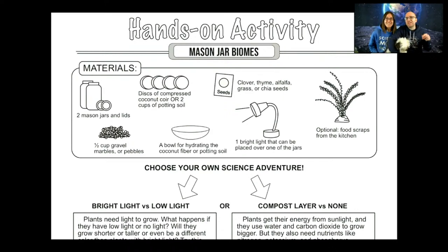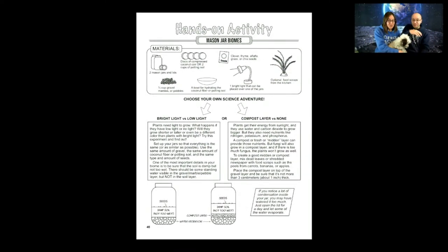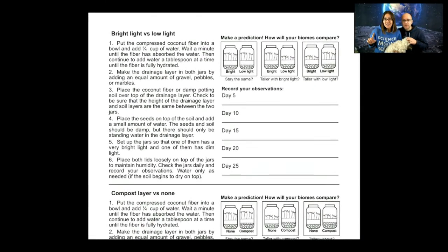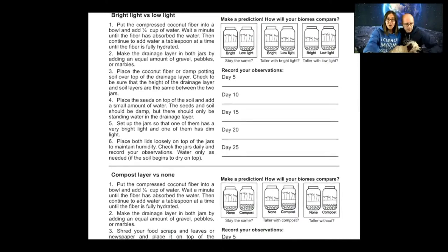The one thing you change is your variable — things that vary or change. The two variables that we used: one was light — a jar with bright light and a jar that was in the dark. Another was a compost layer — one jar with a compost layer and one without. We'll show you the data for both of those.